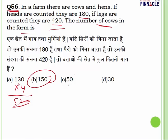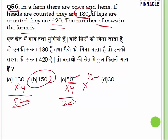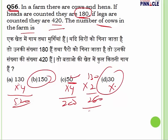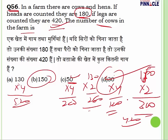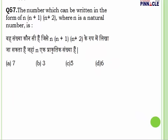Trying option C — 50 cows: 50 into 4 equals 200 legs. Hens would be 130, giving 130 into 2 equals 260 legs; total 460 — not possible. Trying option D — 30 cows: 30 into 4 equals 120 legs. Hens would be 150, giving 150 into 2 equals 300 legs; total 420 — which matches. So the answer is D. Such questions can be solved by common observation or option technique.